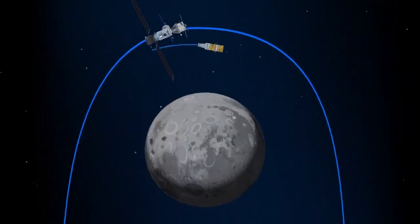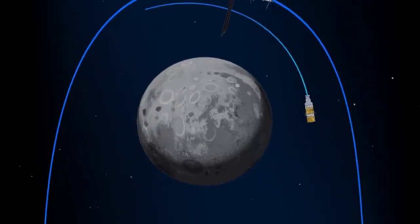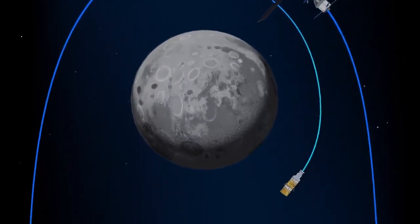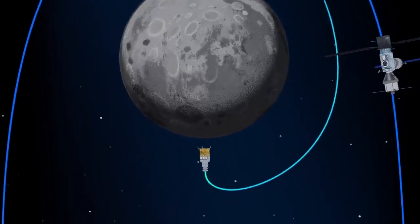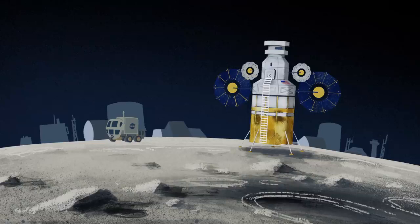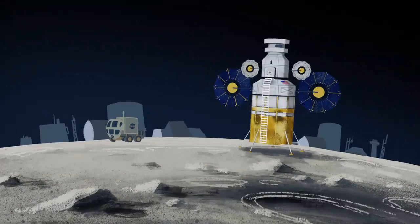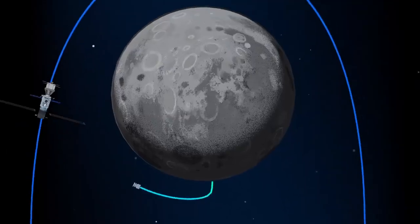The lunar lander system itself is built for three unique steps: descending from the halo orbit of Gateway down to a low lunar orbit, descending from low lunar orbit to the surface, and once the lunar mission is complete, launching from the surface of the Moon and ascending all the way back to the orbiting Gateway.